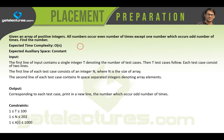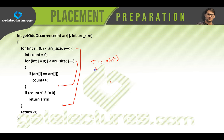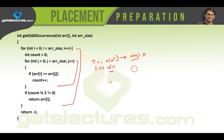In the last video we discussed the problem of finding the number with odd occurrence in an array. We covered the first algorithm using two loops, which gave us a time complexity of O(n²) and space complexity of O(1). Since we need to solve this in O(n), let us introduce the second solution using hash tables or hash maps.